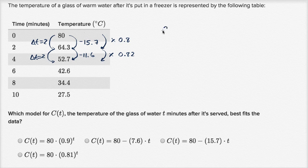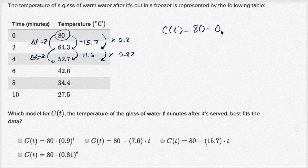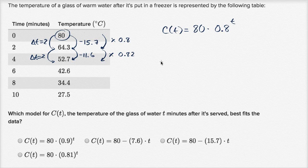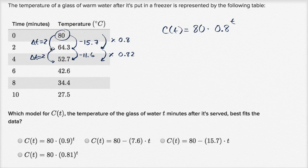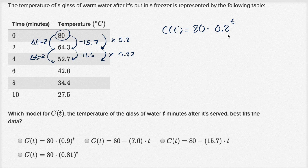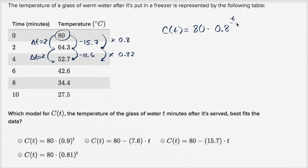Now you might be tempted to immediately say that C of T is going to be equal to our initial temperature, 80 times a common ratio of 0.8 to the number of minutes that pass by. But our change in temperature each time is two minutes. So what we really should say is that it takes two minutes to have a 0.8 change, or to be multiplied by 0.8.